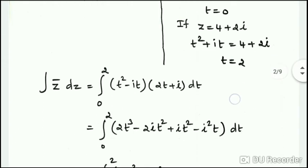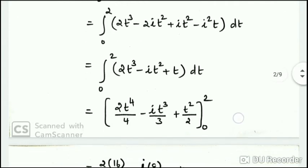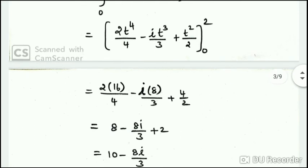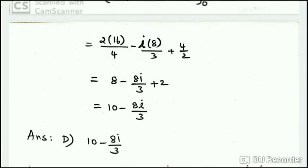Multiplying the two terms and simplifying, the integral from 0 to 2 becomes: (2t³ - it² + t) integrated. Evaluating gives t⁴/4 - it³/3 + t²/2, with upper limit t = 2 and lower limit 0. Substituting gives the answer 10 - 8i/3. Option D: the answer is 10 - 8i/3.